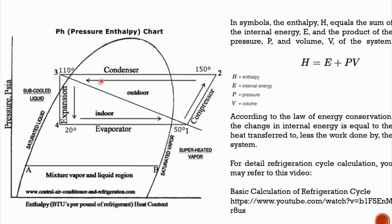From point 1, the refrigerant goes into the compressor, and after the compressor is point 2, where there is an increase in pressure. This is in the region of superheated vapor. From point 2, after the compressor, it goes into the condenser. At the end, after the condenser, we have point 3 which is subcooled liquid. The pressure from point 2 and point 3 are the same.